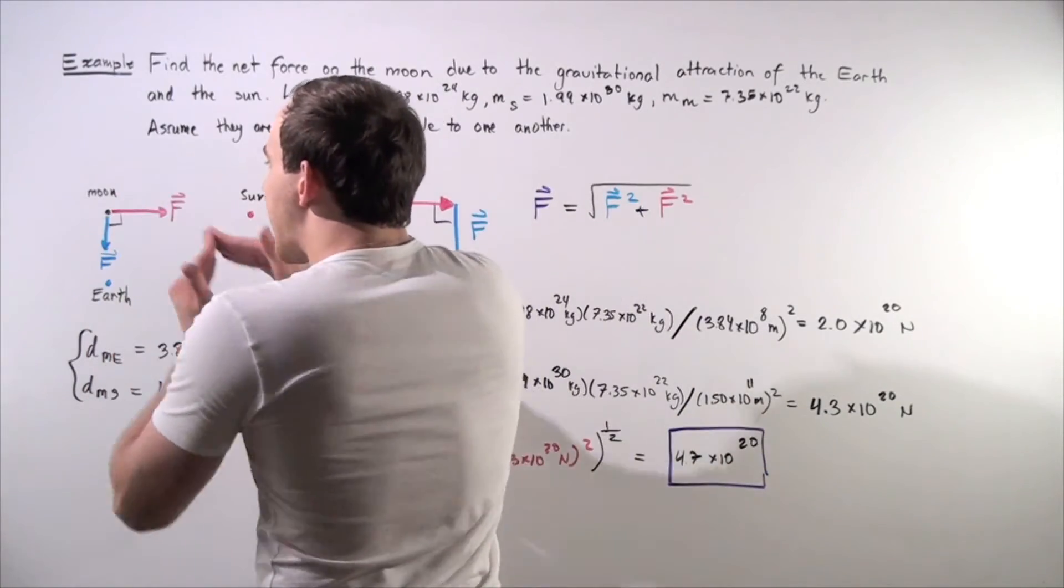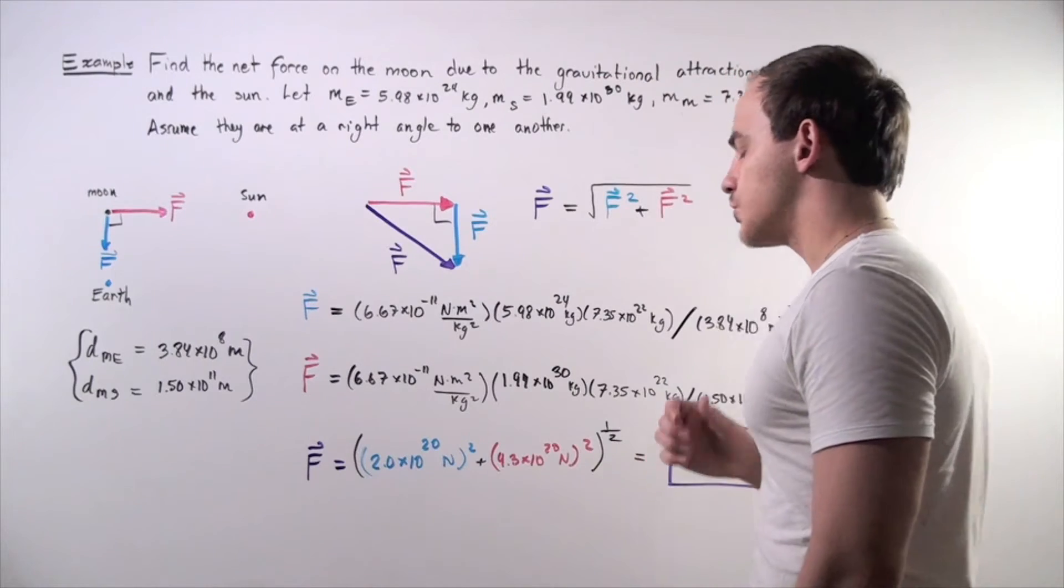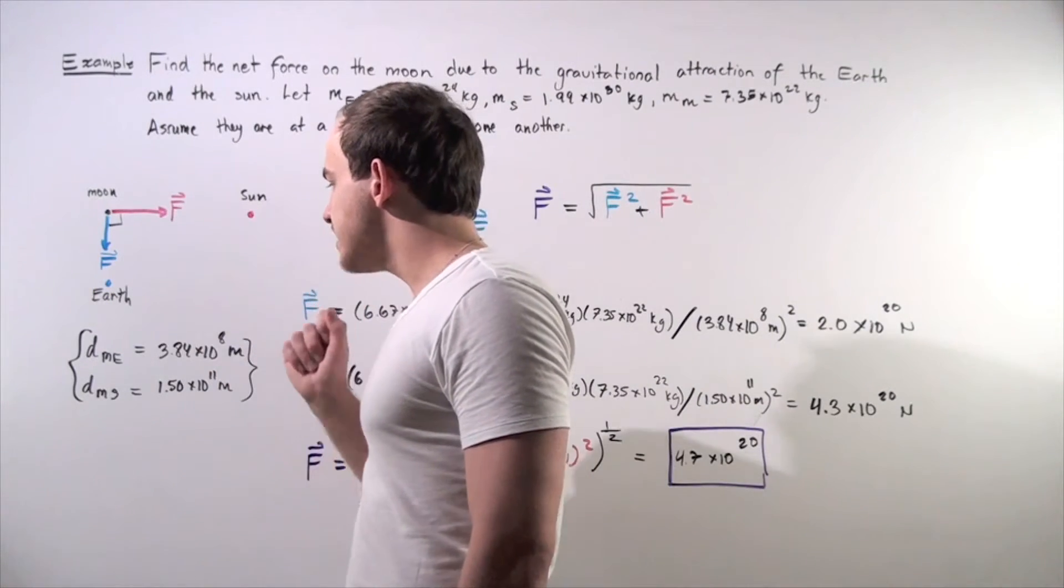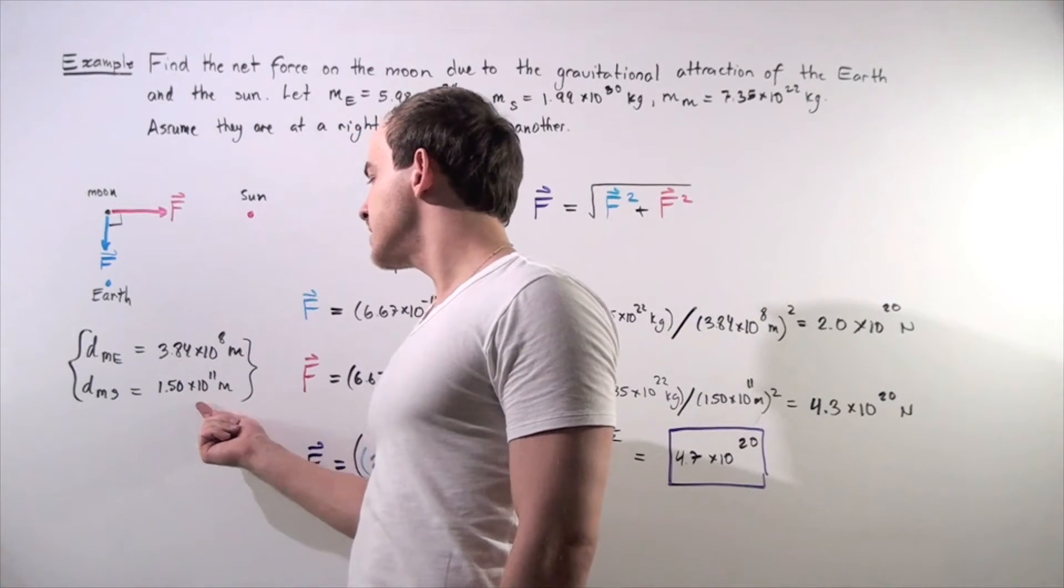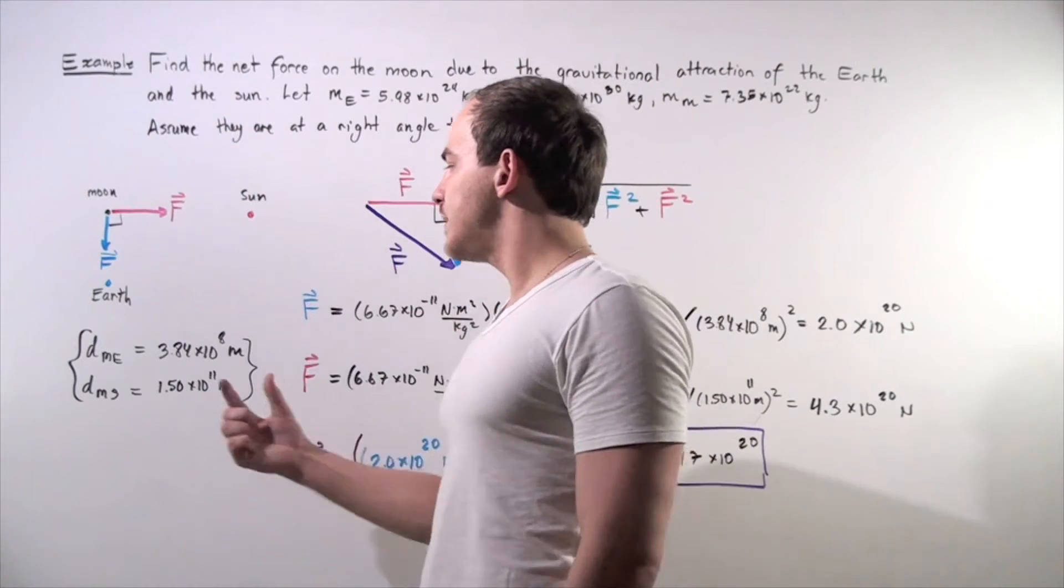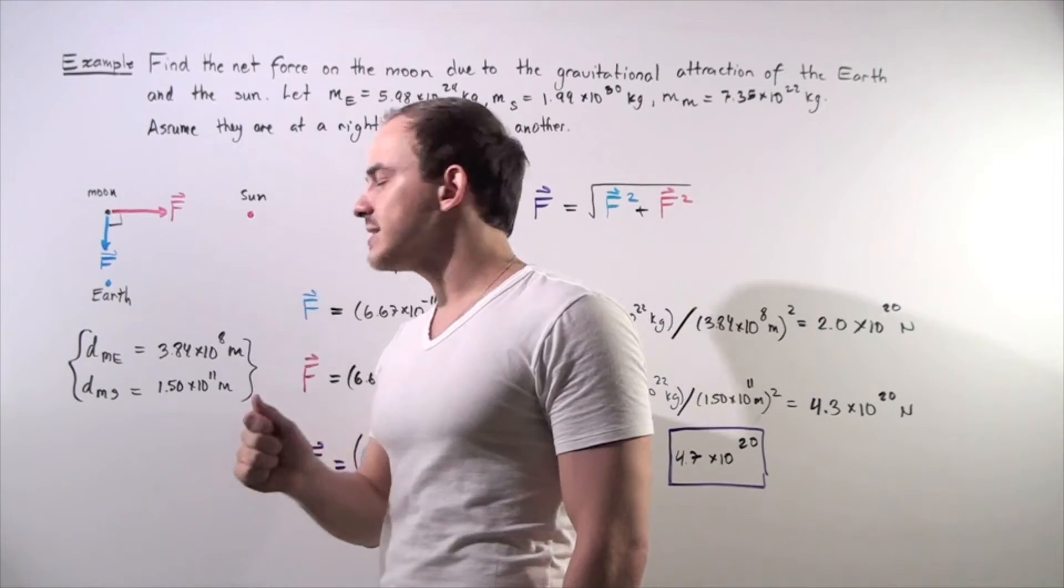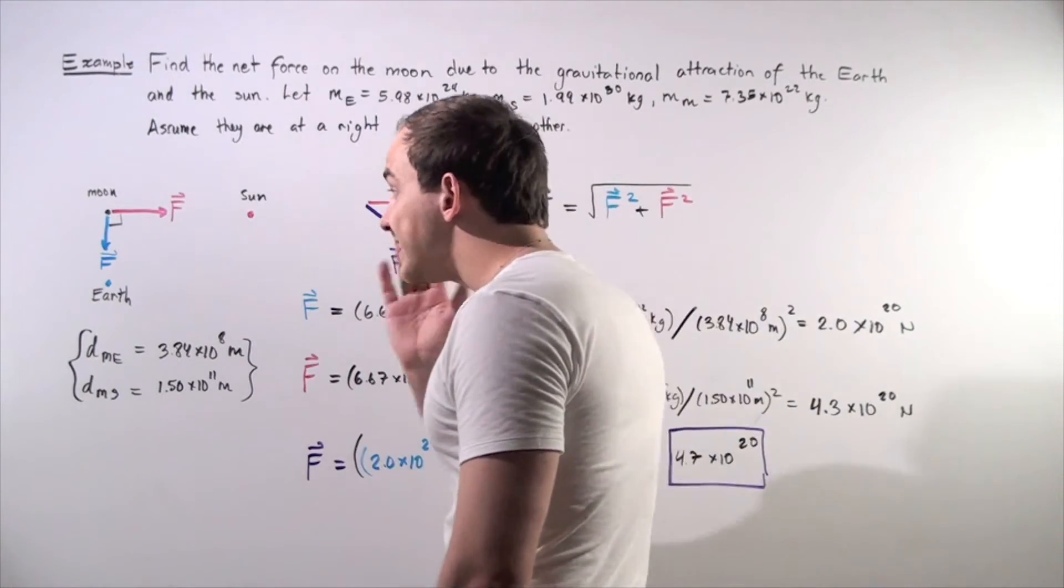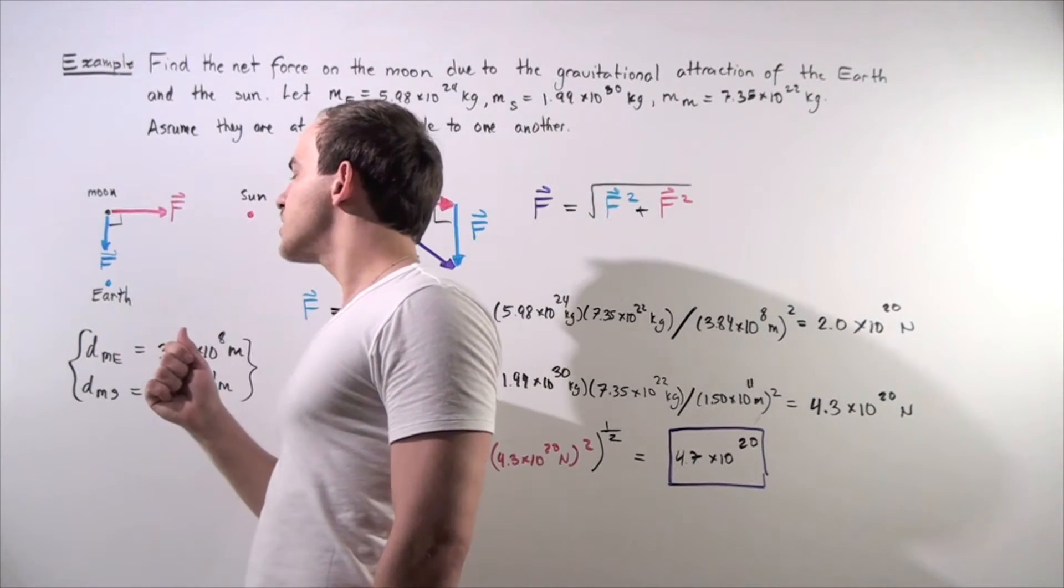And these forces act exactly at a 90 degree angle to one another. Let's suppose the distance from the Moon to the Sun is given by this distance, so 1.50 times 10 to the 11 meters, and the distance from the Moon to the Earth is given by this value, 3.84 times 10 to the 8 meters. So what we essentially want to find is the net force that acts on the Moon due to these two forces.